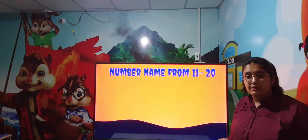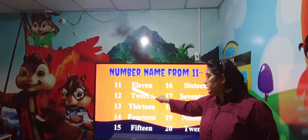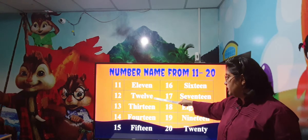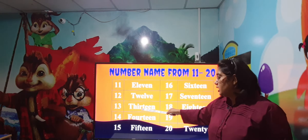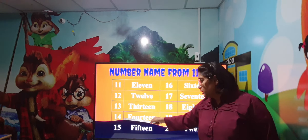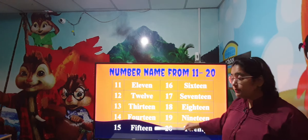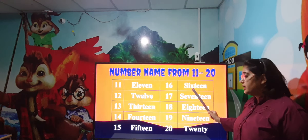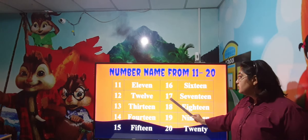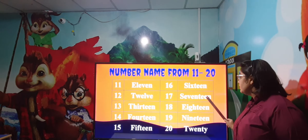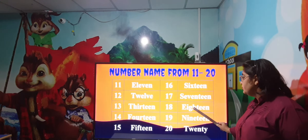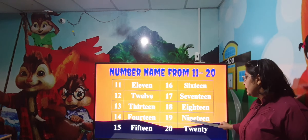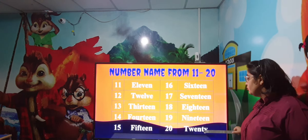Now let us learn the spellings from 11 to 20. 11 - ELEVEN, 12 - TWELVE, 13 - THIRTEEN, 14 - FOURTEEN, 15 - FIFTEEN, 16 - SIXTEEN, 17 - SEVENTEEN, 18 - EIGHTEEN, 19 - NINETEEN, 20 - TWENTY.